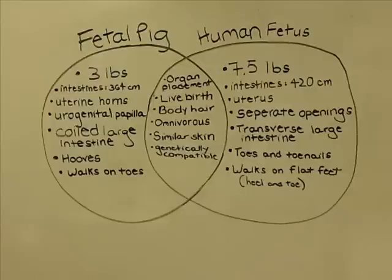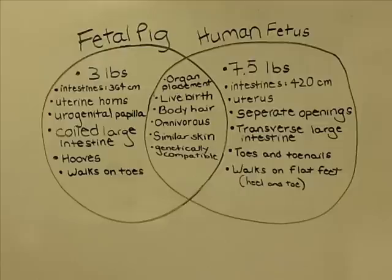There are many similarities between the fetal pig and the human fetus. These include their organ placement, the fact that they both give live birth, they both have body hair, they are both omnivores, they have very similar skin, and they are genetically compatible. Some major differences include the average weight at birth, the average length of the small and large intestines, the setup of their reproductive systems, the genital openings, the orientation of their large intestines, and the anatomy and physiology of their feet.